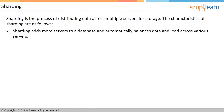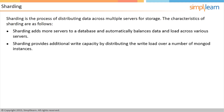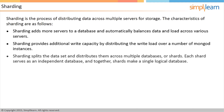Sharding allows you to add more servers to your database to support data growth and automatically balances data and load across various servers. Sharding provides additional write capacity by distributing the write load over a number of MongoDB instances. It splits the data set and distributes them across multiple databases or shards. Each shard serves as an independent database, and together shards make a single logical database.